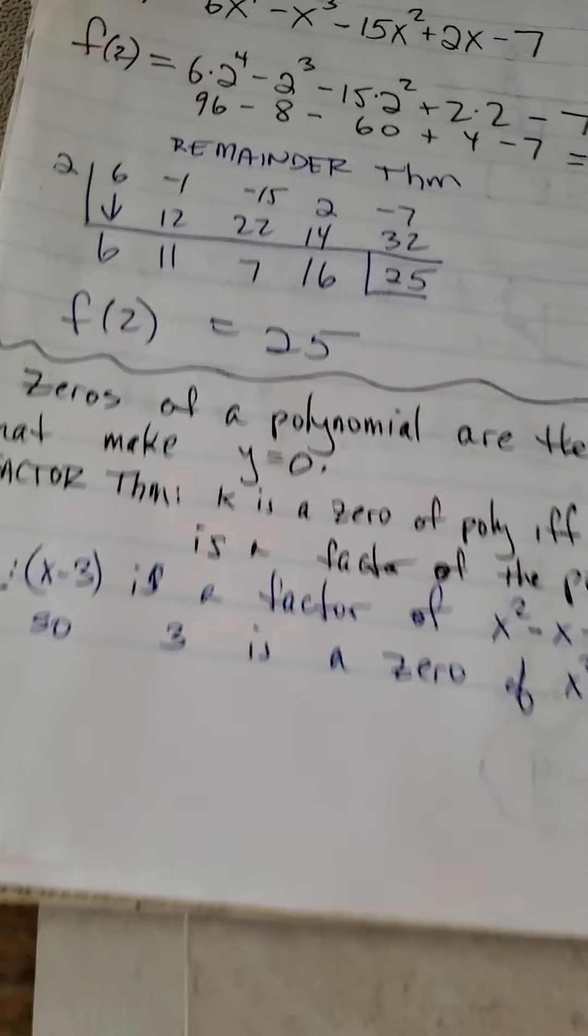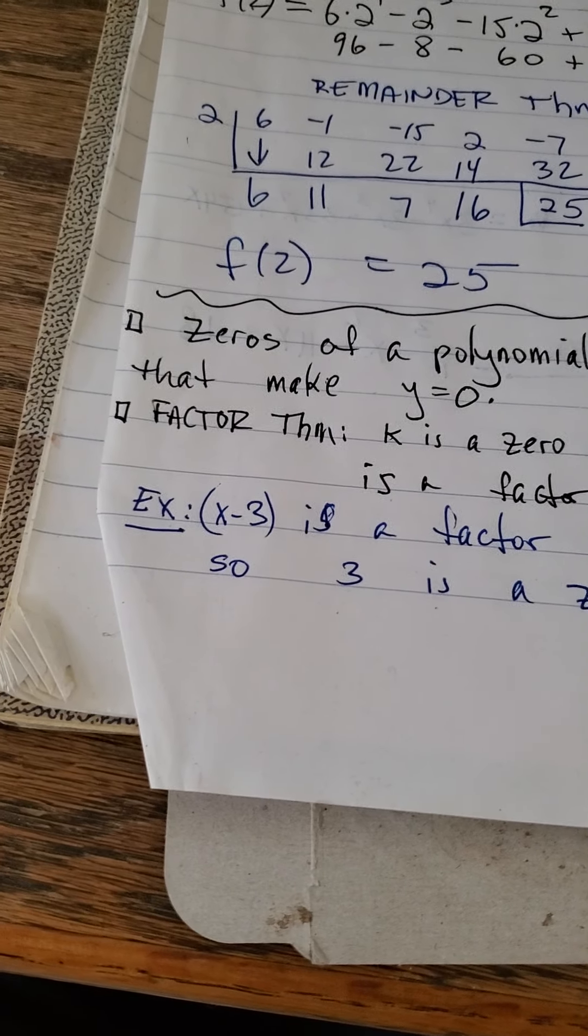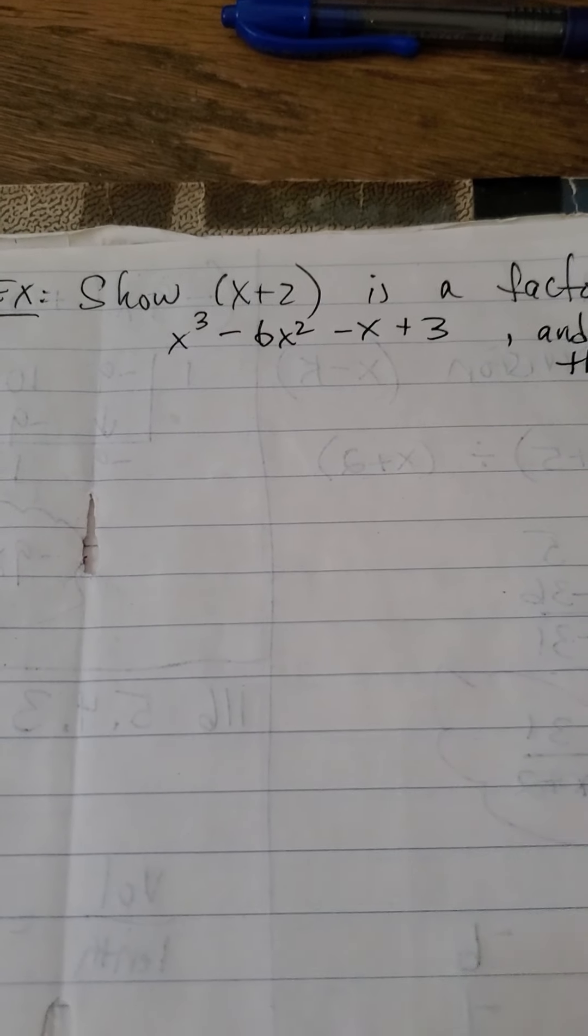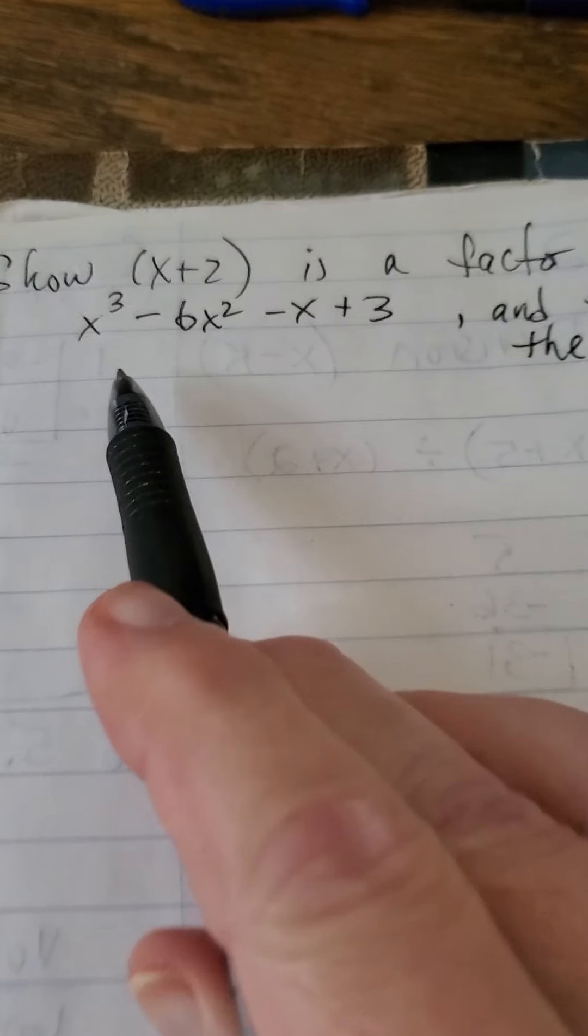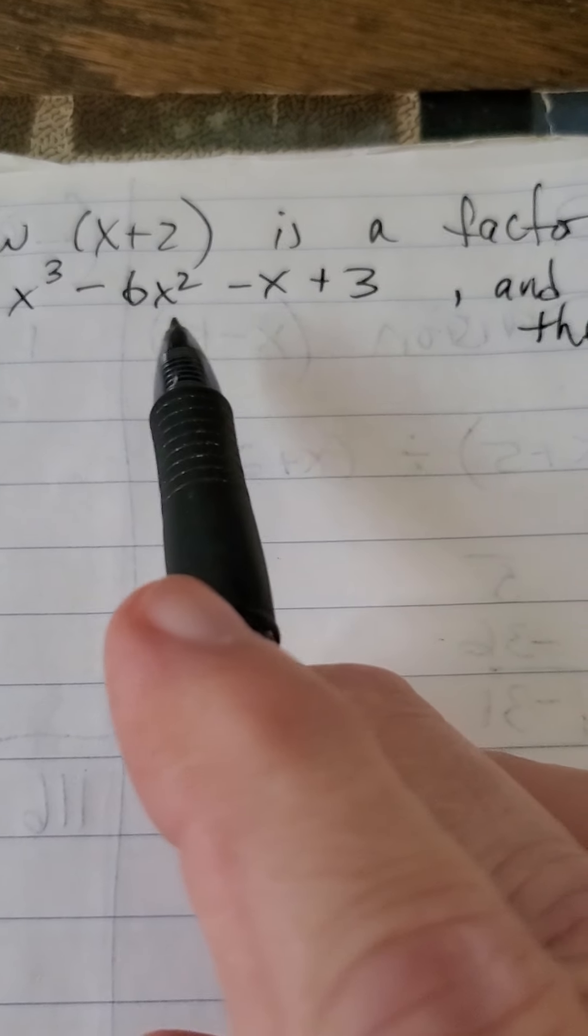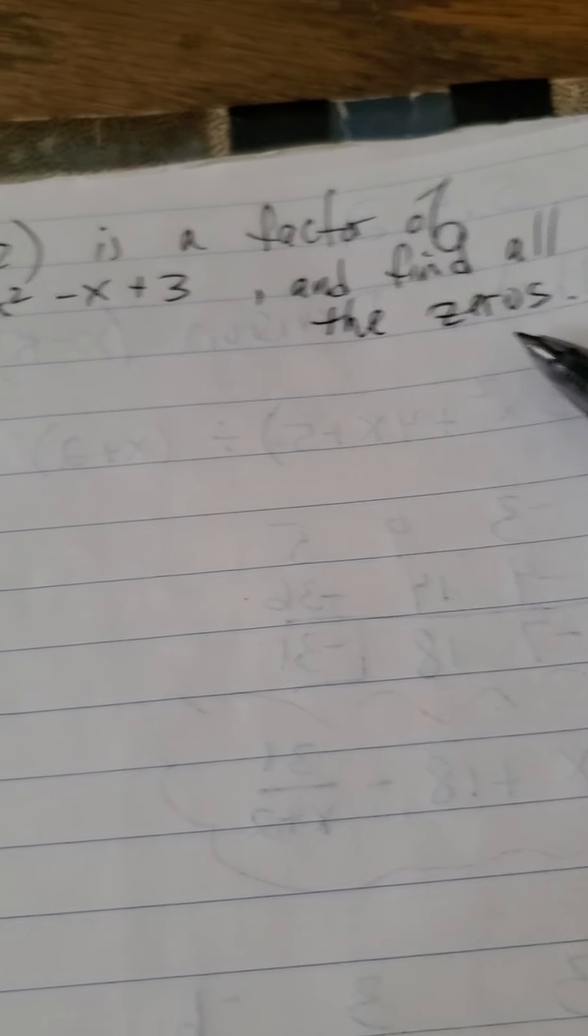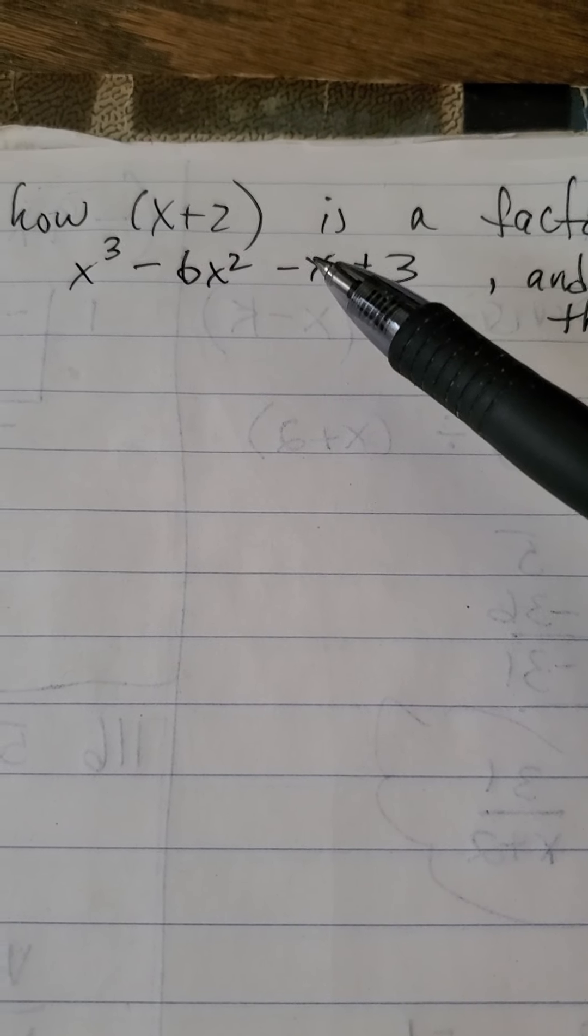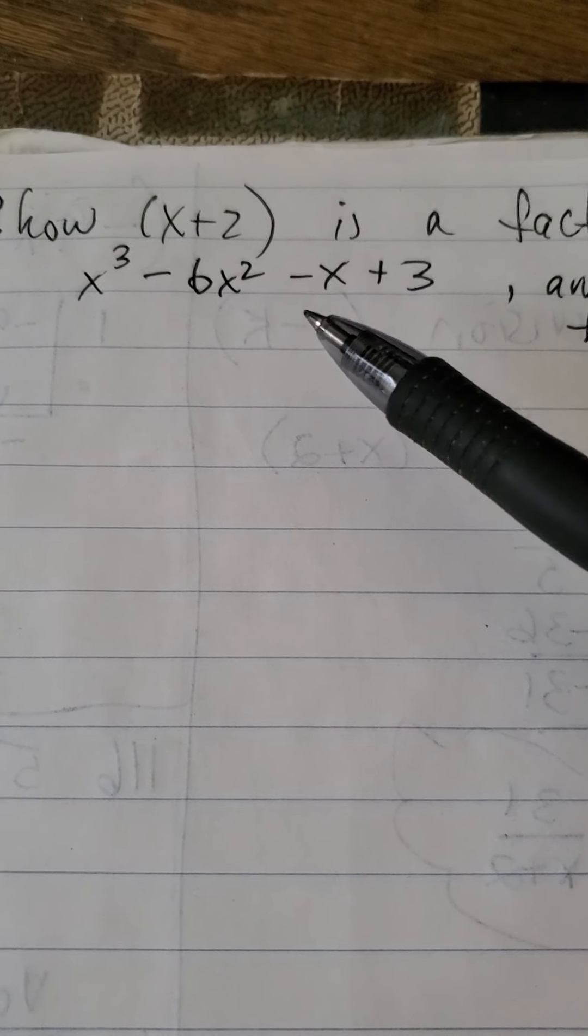Let's do an example. I'm going to give you a third degree polynomial. I'll give you one of the factors and see if you can figure out all the zeros. For example, show that x plus 2 is a factor of the third degree polynomial x cubed minus 6x squared minus x plus 3, and then find all the zeros. First, let's show that x plus 2 is a factor. And in order to do that, I want to show that negative 2 is a 0.